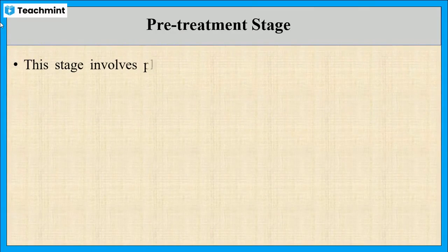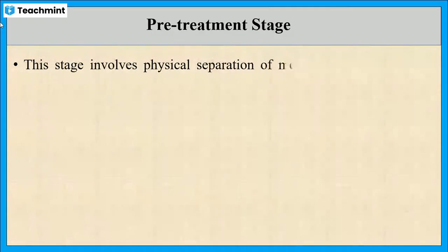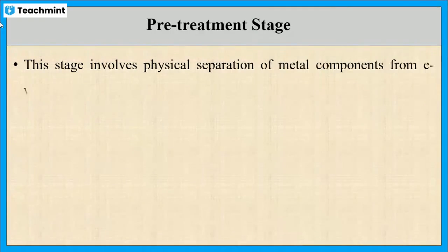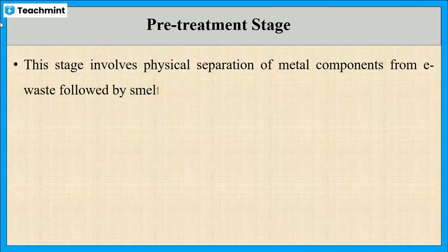The first stage is the pre-treatment stage. This stage involves physical separation of metal from e-waste and smelting of the mixture.